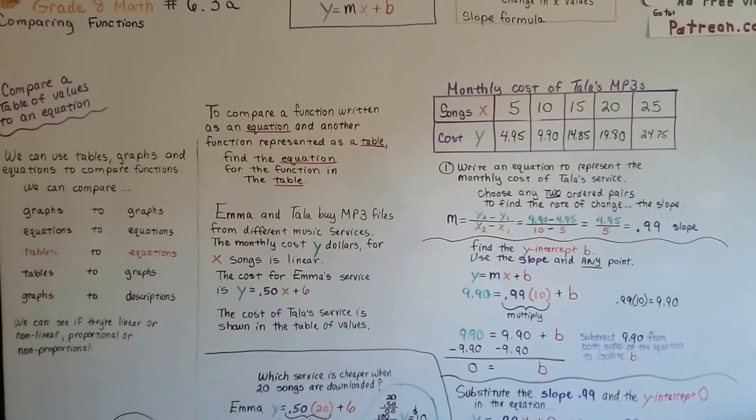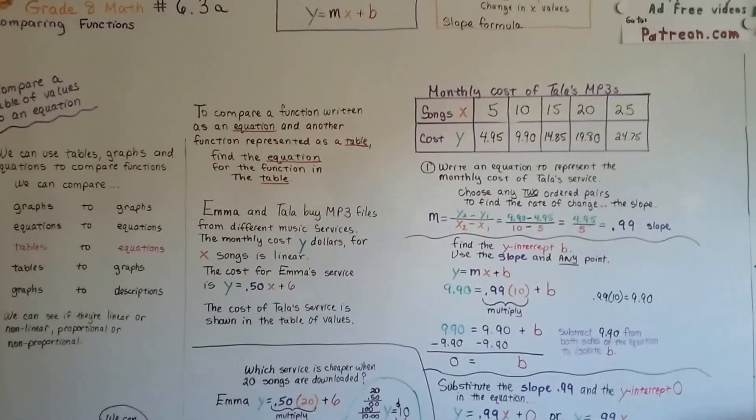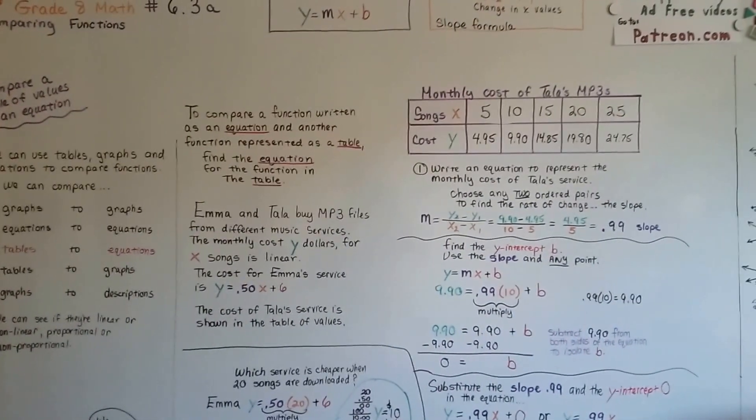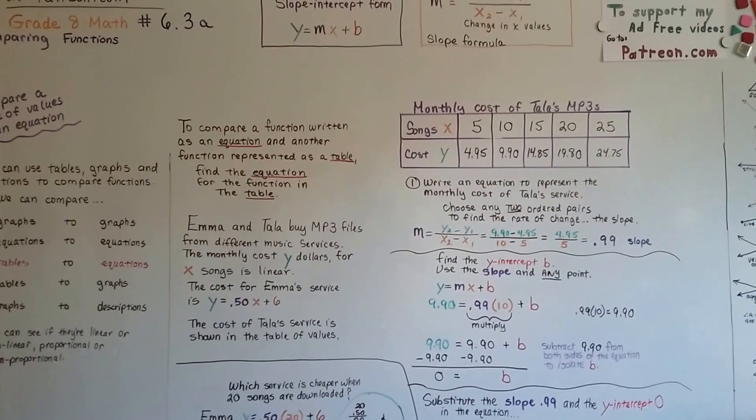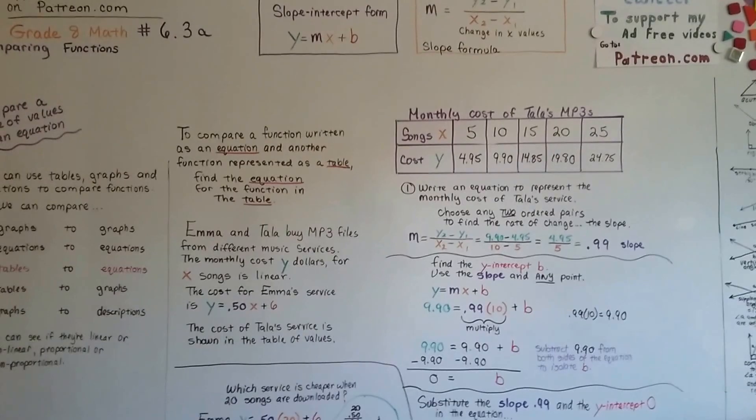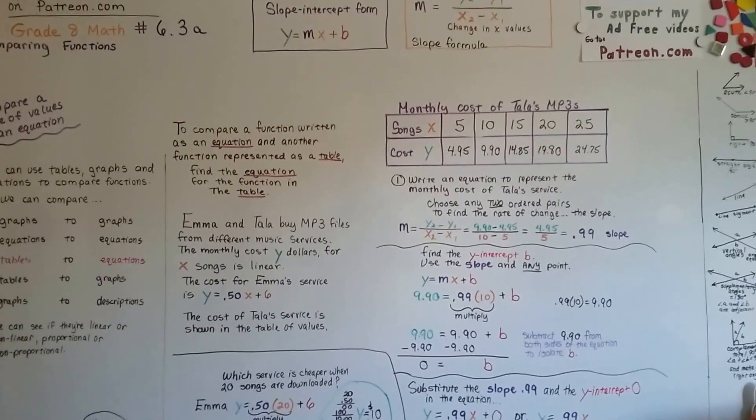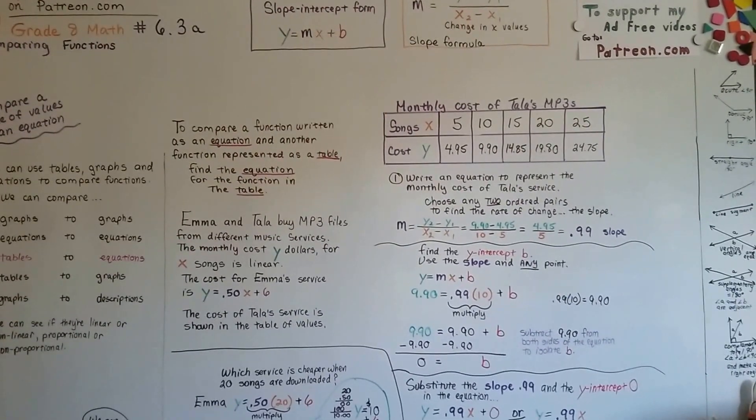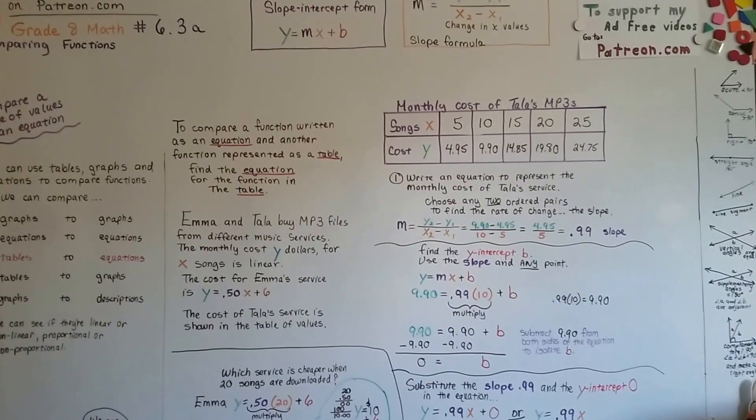We're going to continue on to 6.3b. I'm going to talk about comparing tables to graphs. Don't forget to hit the like button if you like my videos. Don't forget them on Twitter if you like any of these whiteboards as a study guide. I'll see you next video. You'll do great. Don't worry. Bye bye.